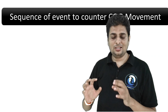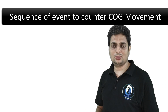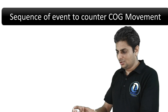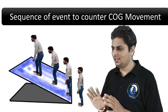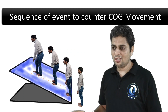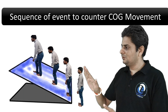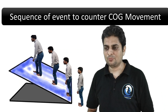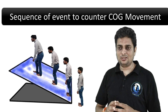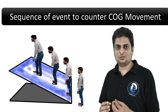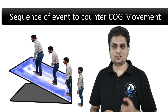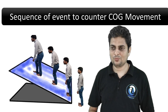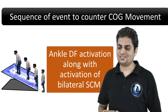Now let's discuss the sequence of events from the motor control system's response to prevent the COG falling posterior to the base of support. This can be observed by standing on an inclined surface and progressively increasing the level of inclination. The first event: once exposed to a force creating a posterior shift of COG, the ankle dorsiflexors get activated along with bilateral sternocleidomastoid.